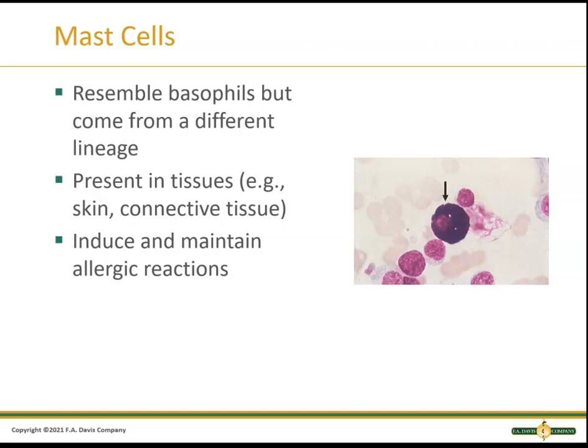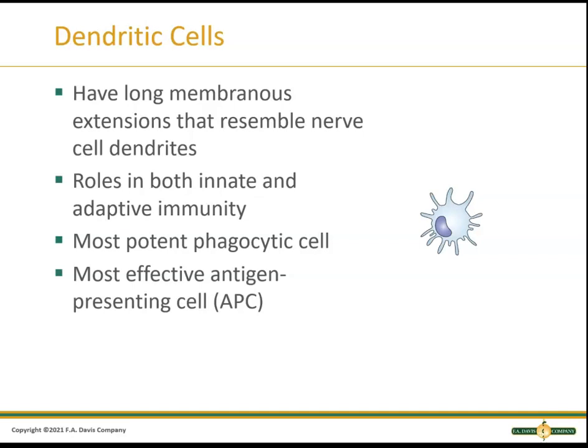Mast cells look like basophils but they're found in the tissue, particularly in connective tissue — so we call them tissue basophils. They're a different lineage but still important in immune responses. When a dermatologist does a biopsy and sees mast cells, that indicates an allergic response. If macrophages or neutrophils are seen, that suggests an infectious process like a bacterial cause.